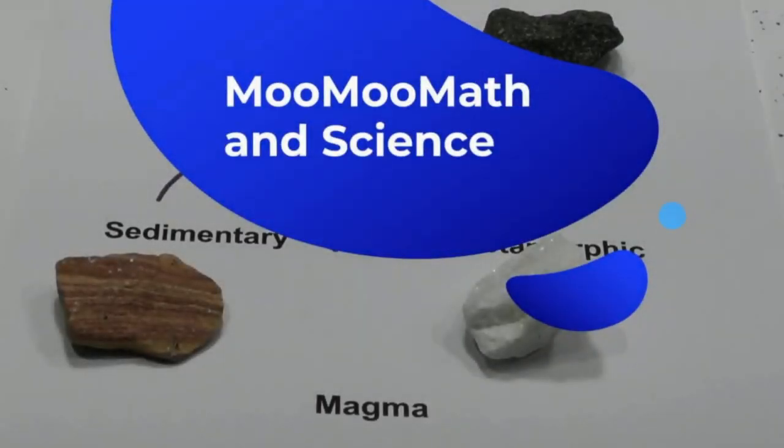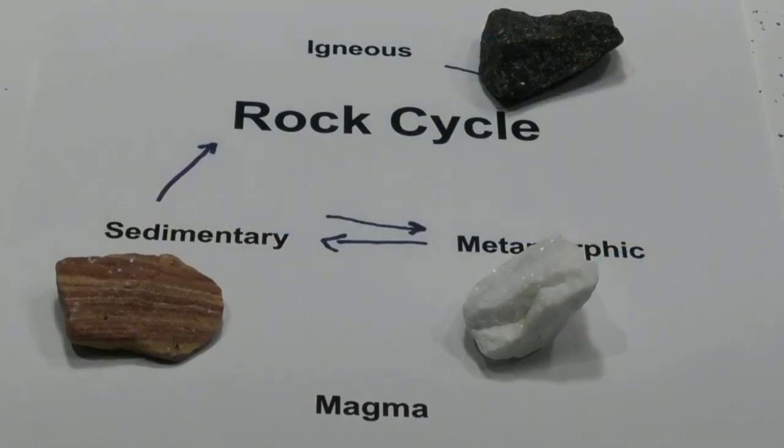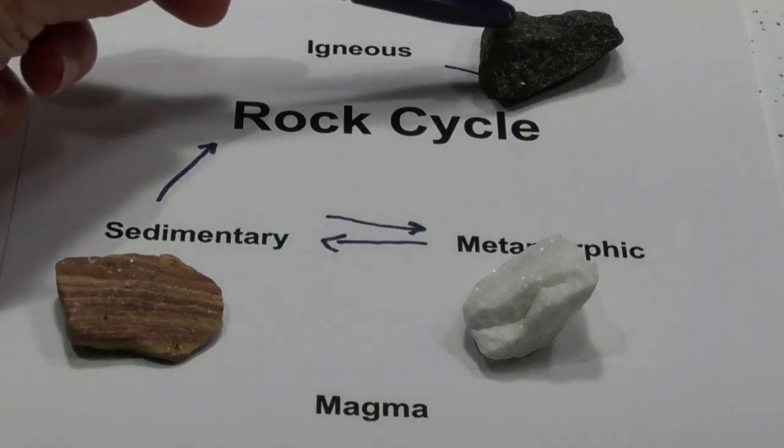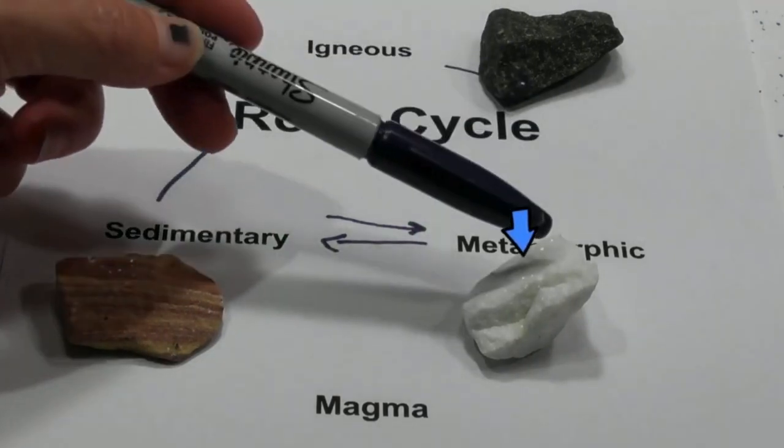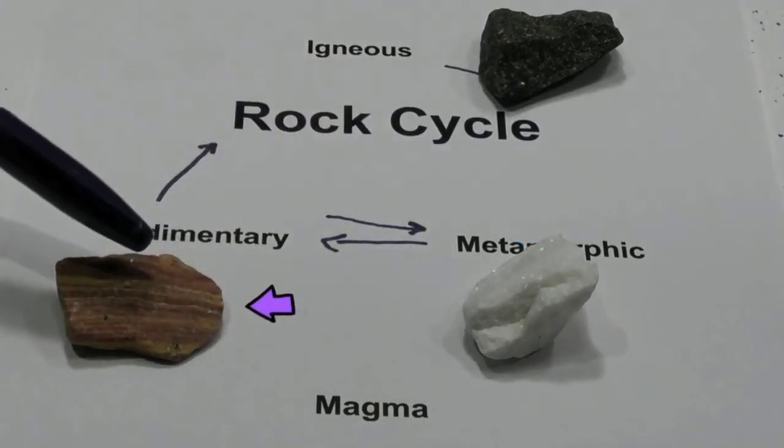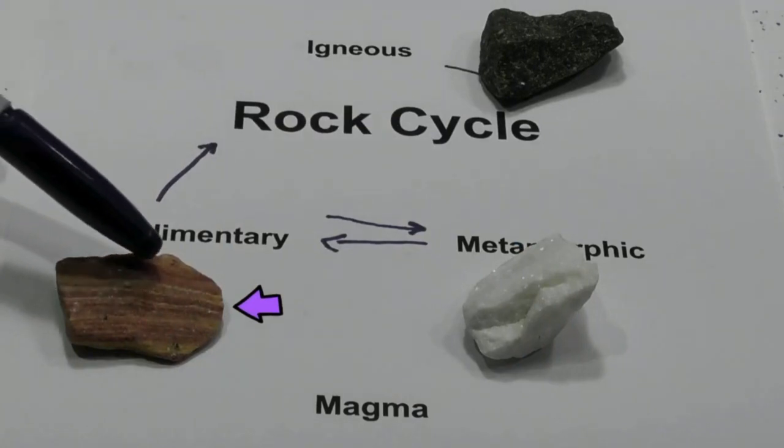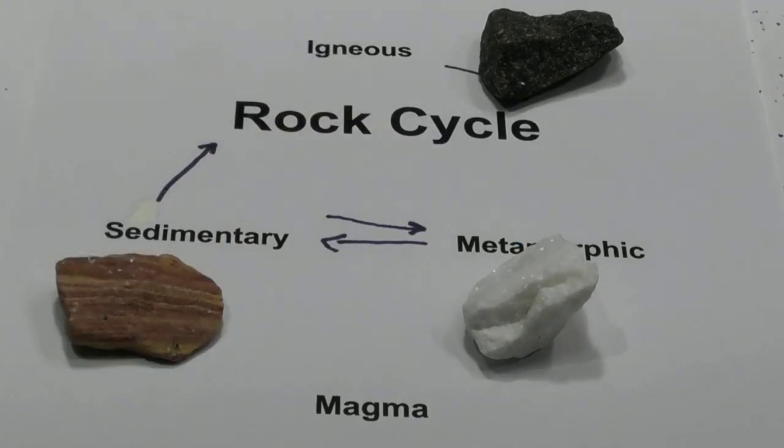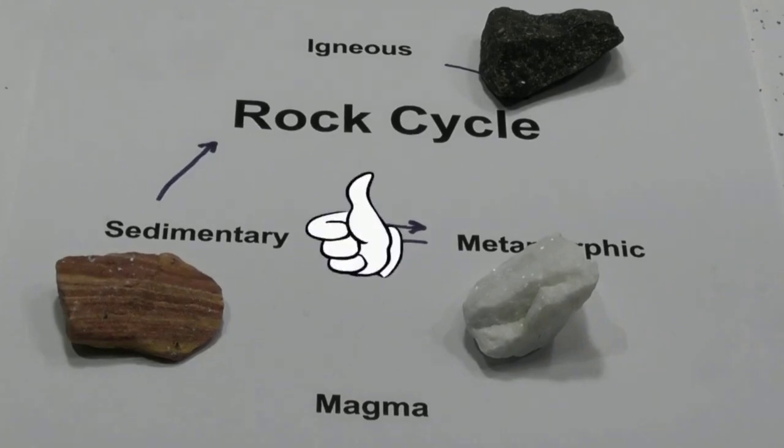Moomoo Math and Science and a simple diagram of the rock cycle. The rock cycle basically illustrates how an igneous rock can become a metamorphic rock, or a metamorphic rock can become a sedimentary rock, or a sedimentary rock can become an igneous rock. So I'll break it down step by step so you know what's going on with the rock cycle.